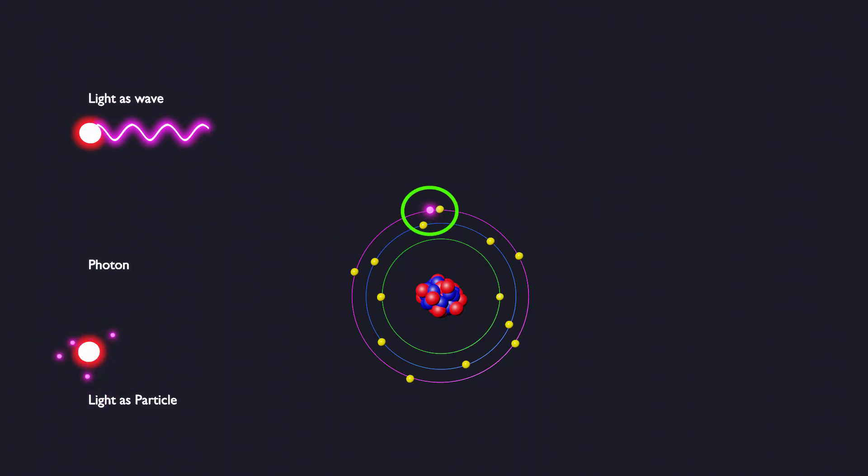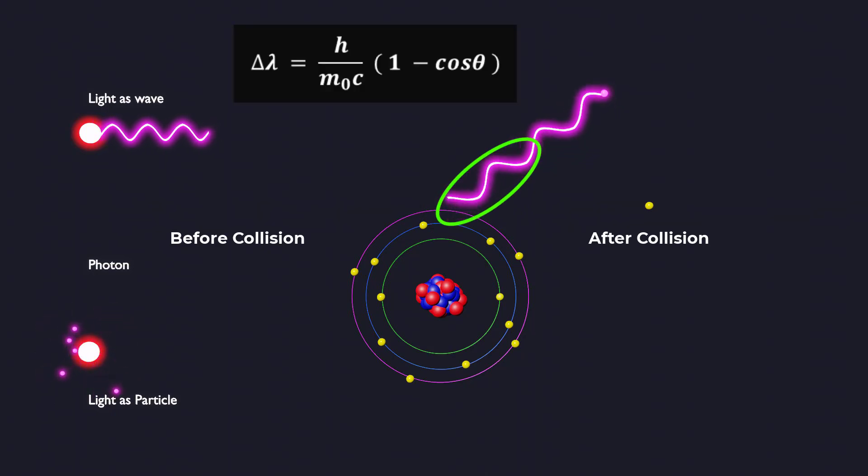The conservation of energy and momentum before and after the collision allows us to establish a relationship for the change in the scattered photon's wavelength.